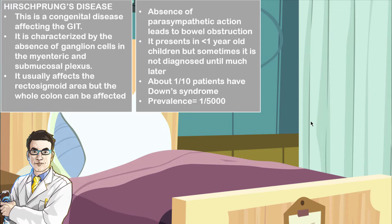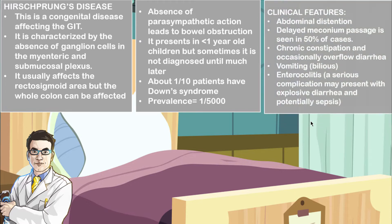It is often present in children below the age of one year, but sometimes the diagnosis may actually be made later on in life. About 1 out of 10 patients have a comorbidity, which is Down's syndrome. The prevalence of the condition is 1 out of 5,000 patients.